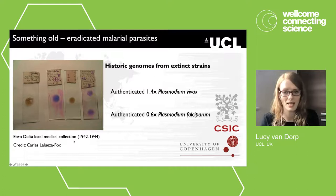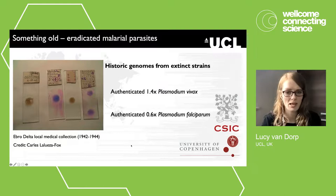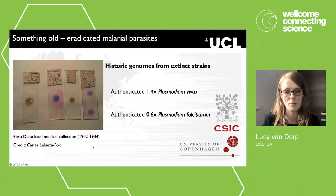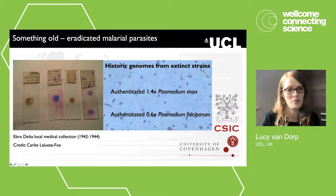A set of slides with blood stains of malaria-affected people was identified in a local medical collection in the Ebro Delta in Spain. These were blood samples from patients — predominantly local people working in the Ebro rice fields between 1942 and 1944, with no history of international travel. As part of an international collaboration with the Institute of Evolutionary Biology and the section for Evolutionary Genomics at the University of Copenhagen, we generated shotgun Illumina sequence data from four archival blood slides, obtaining a partial P. falciparum genome and a reasonable-coverage P. vivax genome.